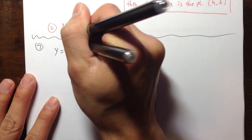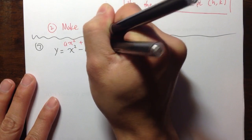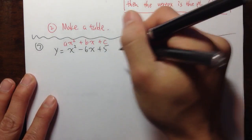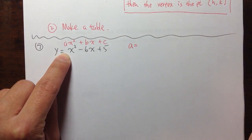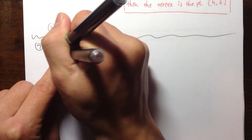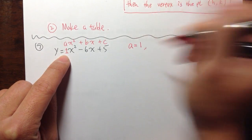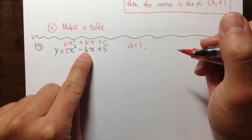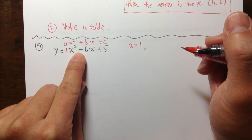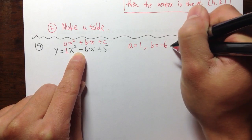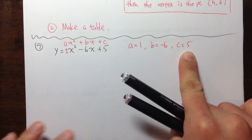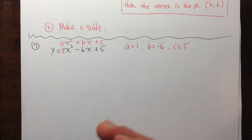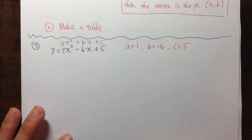We have ax squared plus bx plus c, so let me note that a is the number in front of x squared, which in this case is 1. So a is equal to 1. And b is equal to negative 6 — you have to account for the sign. b is equal to negative 6. And c is equal to 5, though c doesn't matter for the vertex formula.